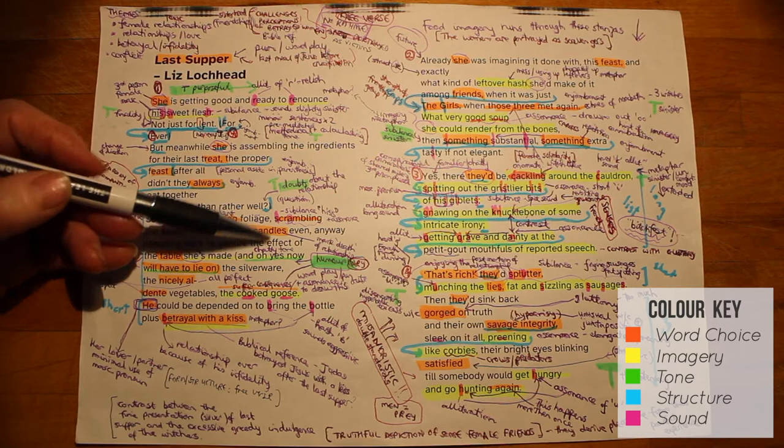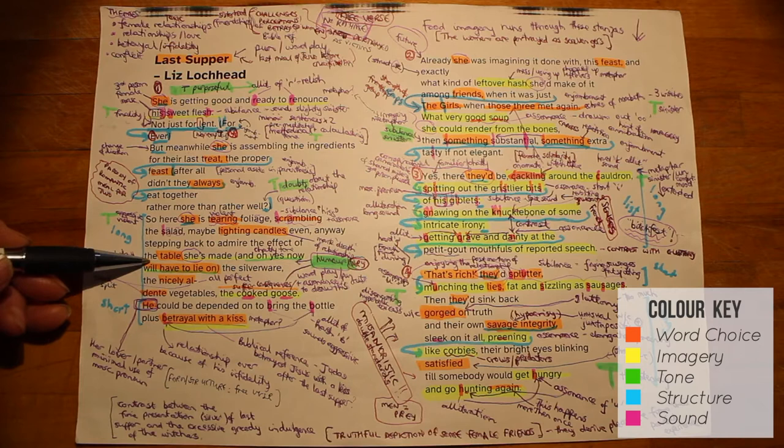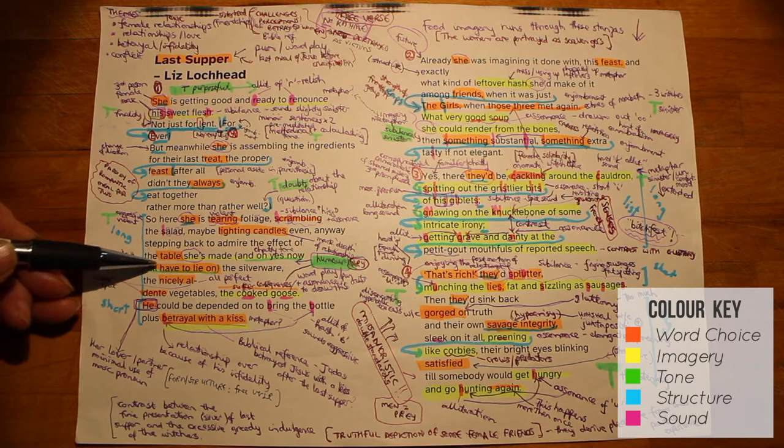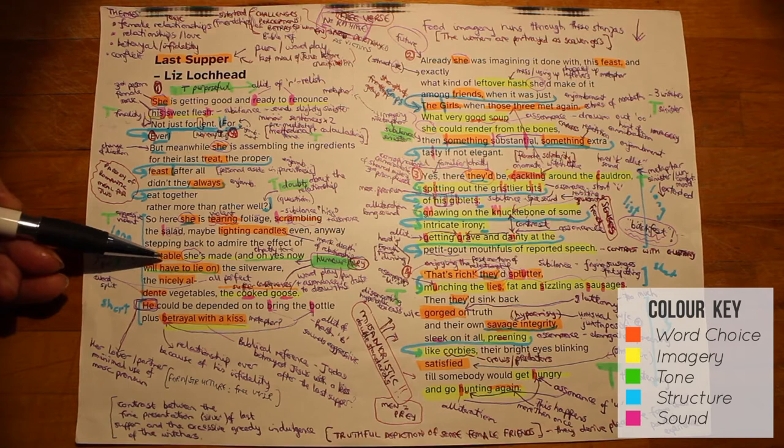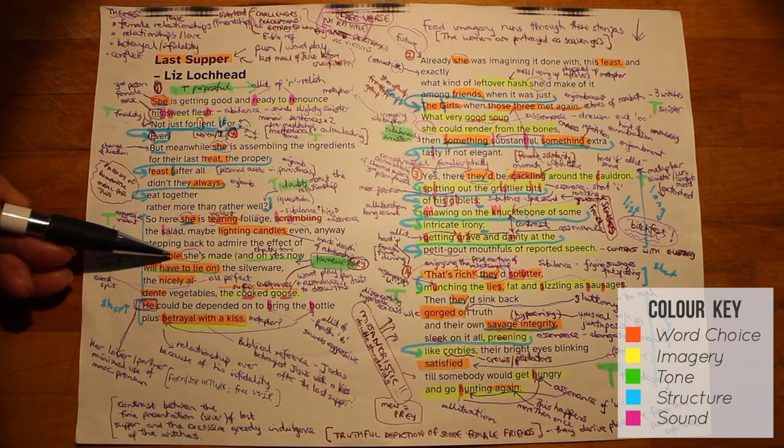The next couple of lines here are quite interesting because there's a play on words. We know the phrase, you've made your bed and now you'll have to lie on it. Well, here she slightly changes that phrase and says the table she's made or other set, and oh yes, now we'll have to lie on. The use of the parenthesis there giving a chatty tone. So it's a slight reformulation of that familiar phrase there. The implication here is that she has got herself into this situation by having a relationship with this partner, and so now she's having to deal with the situation of her own making.